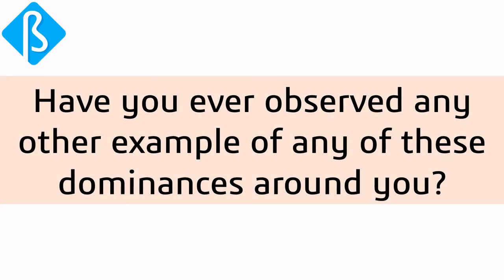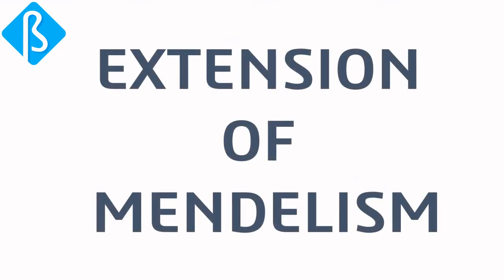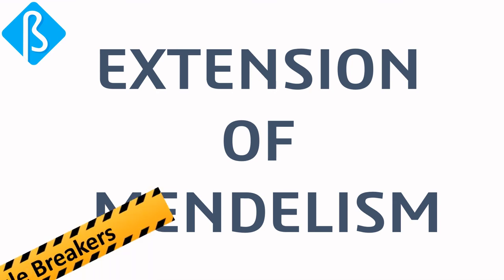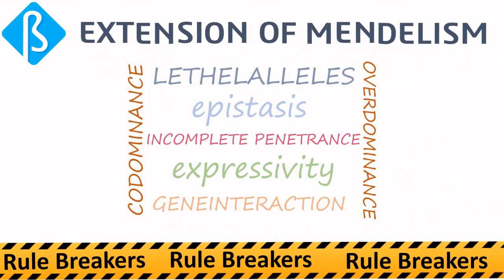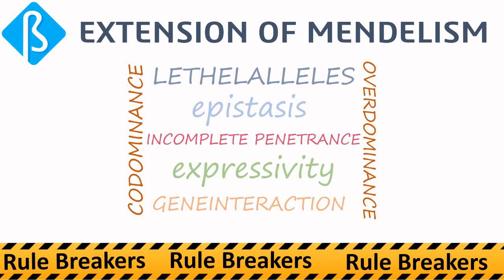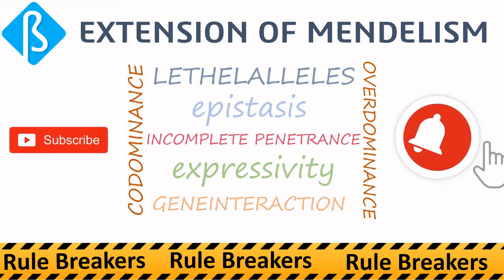Have you ever observed other examples of these dominance types around you? Tell us in the comment box, share this video with your study partner, and give us a thumbs up if you enjoyed it. Keep in mind that this is not all about extensions of Mendelism — there are other rule-breakers like epistasis, incomplete penetrance, and lethal alleles. Subscribe to the channel and hit the bell icon so you'll be notified whenever we introduce them.